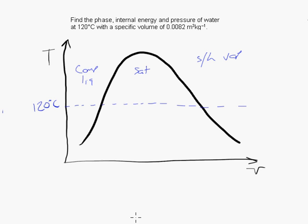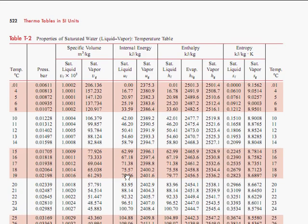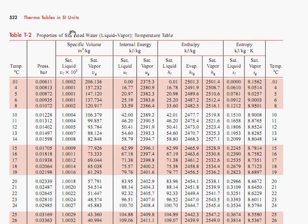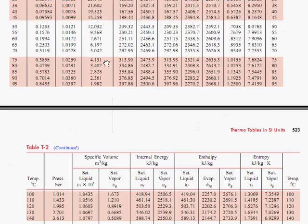We go to the table to do this, and always at this stage when you don't know which phase you're in, you can go to the saturated water table to find out which phase you're in. That will always tell you. So we go to the saturated water table. In this case we know the temperature, so we're going to use the saturated water temperature table. We go down to the temperature that we know, 120 Celsius.